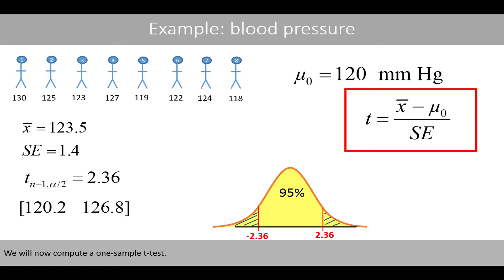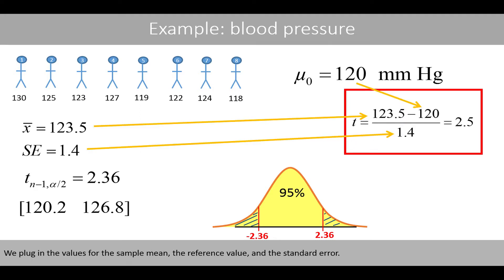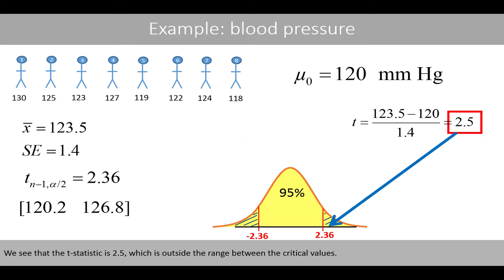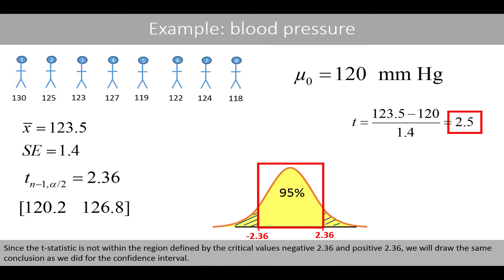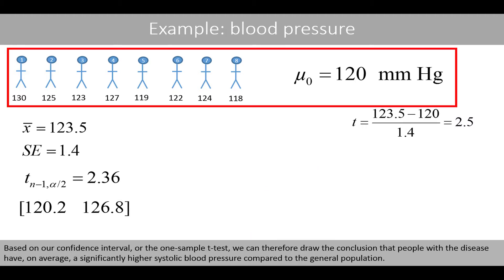We'll now compute the one-sample t-test. We plug in the values for the sample mean, the reference value, and the standard error. The mean systolic blood pressure is 123.5, which is a bit higher than the reference value of 120. The t-statistic is 2.5, which is outside the range between the critical values of negative 2.36 and positive 2.36. We therefore draw the same conclusion as for the confidence interval: people with the disease have, on average, a significantly higher systolic blood pressure compared to the general population.